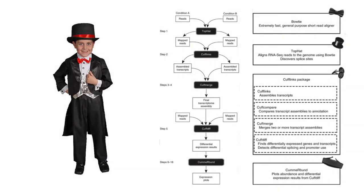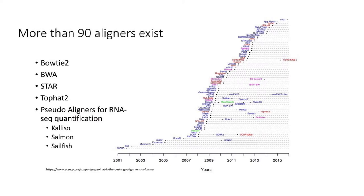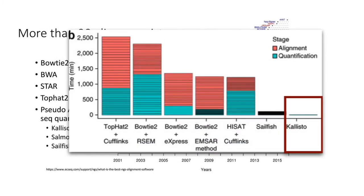One standard way others have described this process is through the Tuxedo protocol, which standardly involves methods like TopHat, including Bowtie and Cufflinks. The TopHat protocol has been around since 2009, providing a comprehensive process from raw reads to expression levels, differential gene expression, and plots of differentially expressed genes. Since 2009, a variety of new methods for alignment and quantification have emerged, with a focus on speed and accuracy, represented by alignment-free strategies like Sailfish and Kallisto.